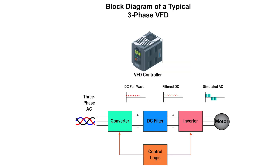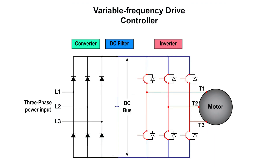It takes fixed voltage and frequency AC input and converts it into a variable voltage and frequency AC output. The example provided is that of a simplified diagram of a VFD controller. The converter, composed of six diodes which are used to allow current to flow in only one direction, rectifies the incoming AC power and converts it into DC. The DC filter, or DC link slash DC bus, connects the rectifier output to the input of the converter.